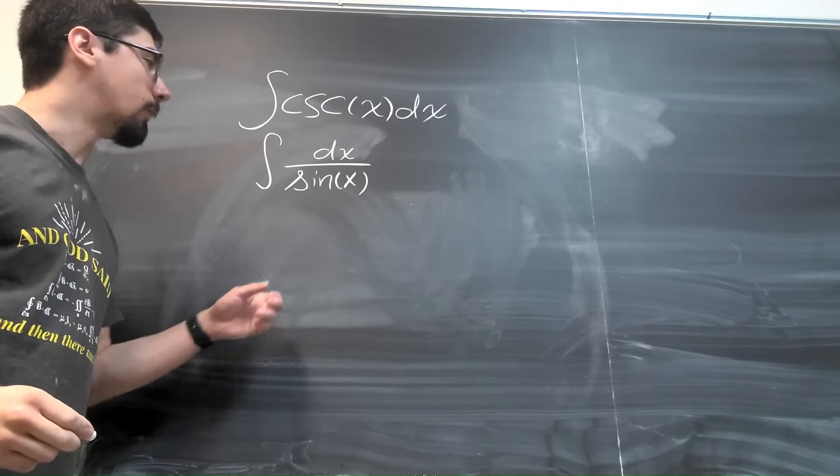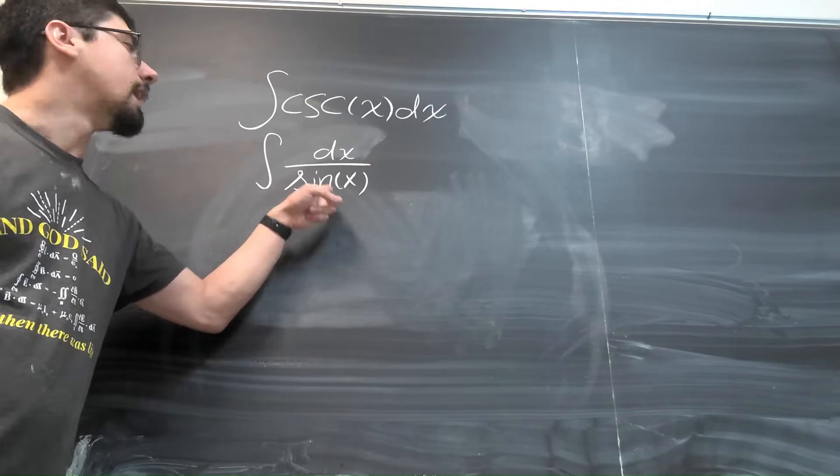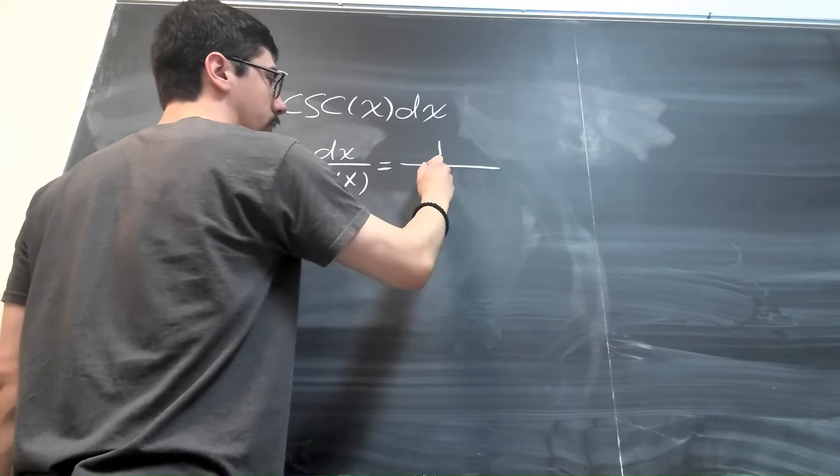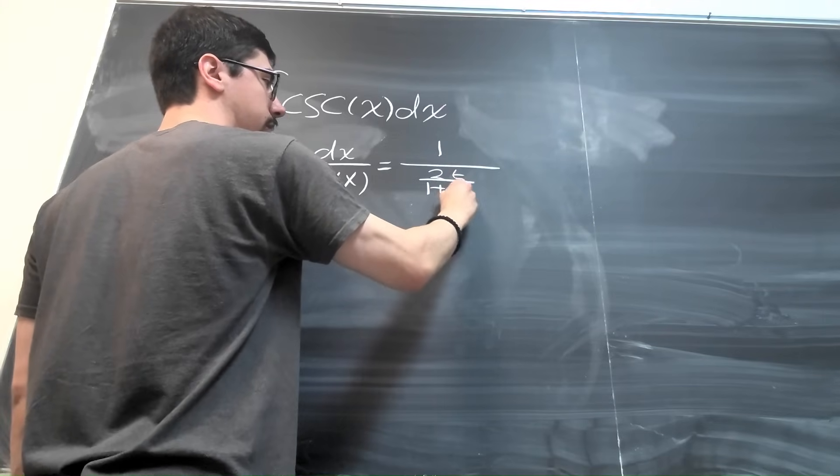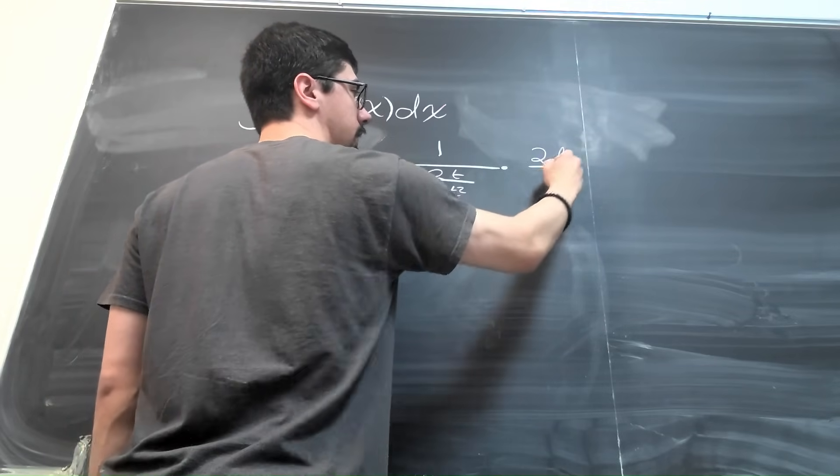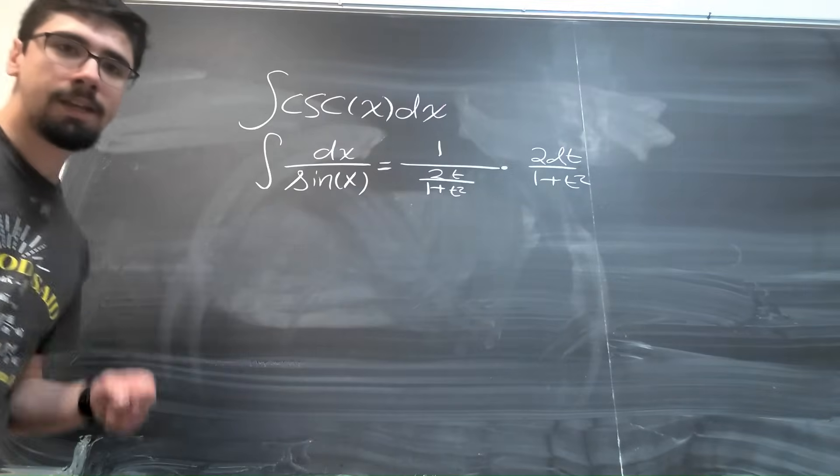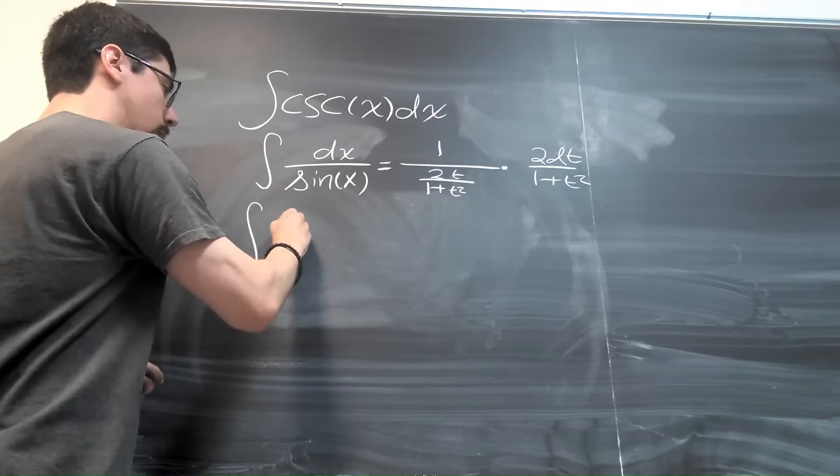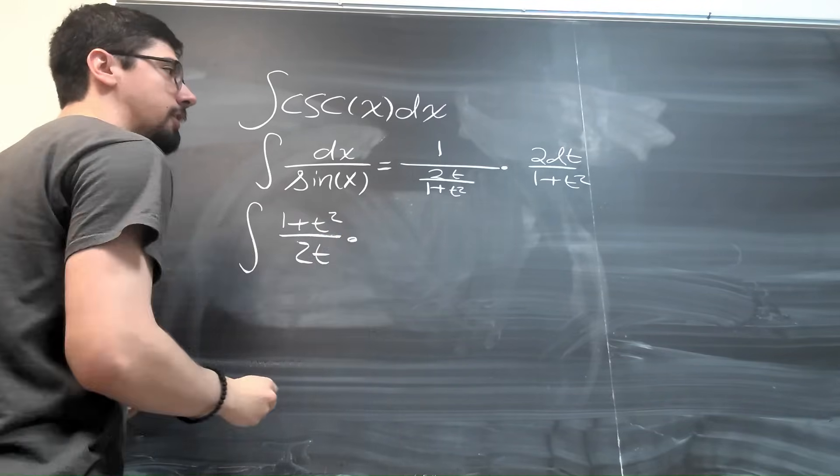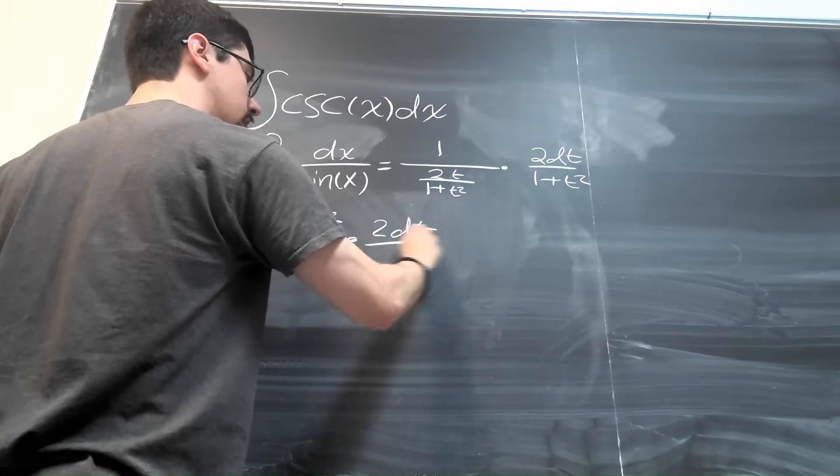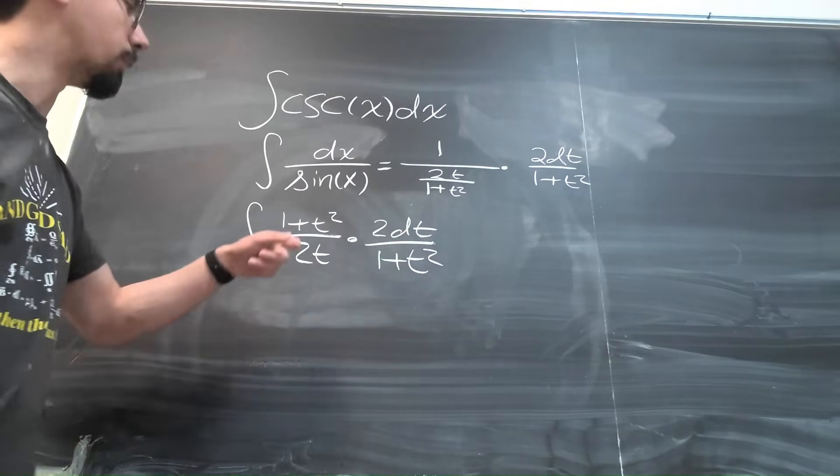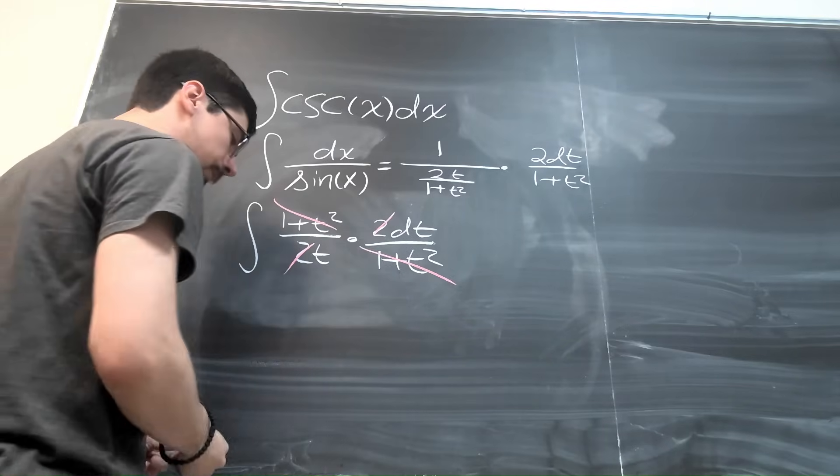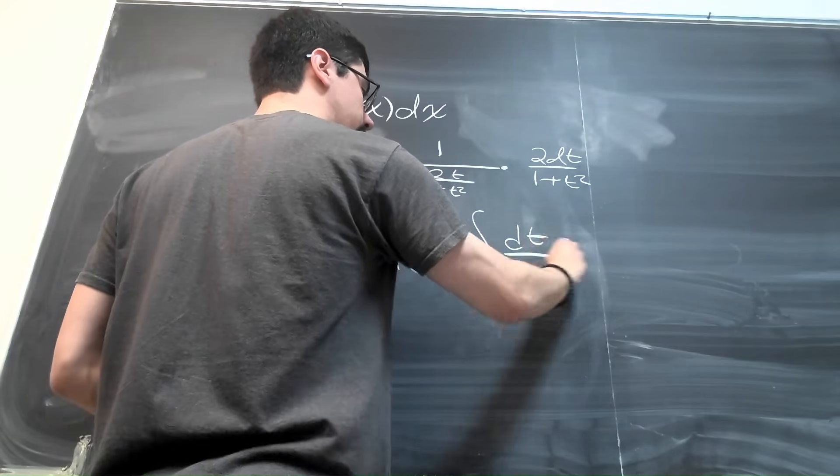And using the table from before, we can replace sine with 2t over 1 plus t squared, and we can replace dx with 2 dt over 1 plus t squared. So that becomes 1 over 2t over 1 plus t squared times 2 dt over 1 plus t squared. This is pretty messy, but we can clean it up a little bit by taking the reciprocal of this and canceling denominators. So we'll get the integral of 1 plus t squared over 2t times 2 dt over 1 plus t squared. And since we have a 1 plus t squared up top and on the bottom, we can cancel those out here. We also have a factor of 2 in the top and the bottom, so the 2s here cancel out, which gives us the integral of dt over t.